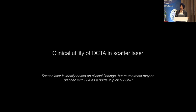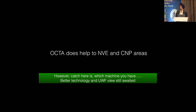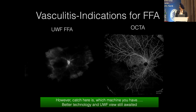What about scatter treatment? The catch again is what machine you have. If you have a machine giving good 12x12 mm scans and a very cooperative patient with minimal artifacts, you can pick up capillary non-perfusion areas and NVE. In one patient already treated with laser, three months later NVE was seen — we can identify areas to retreat based on OCTA. The technology matters, and UWF will be better. For arterial occlusion, OCTA won't detect delay in perfusion but the scans show absence of perfusion adequately without FFA.